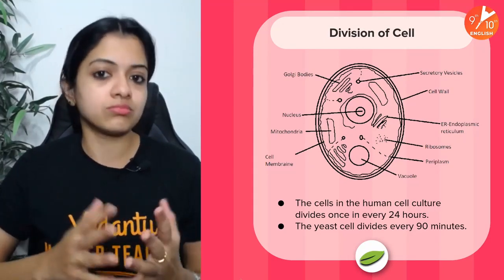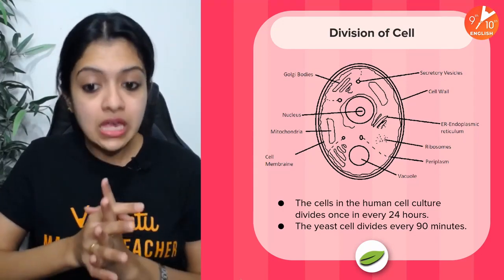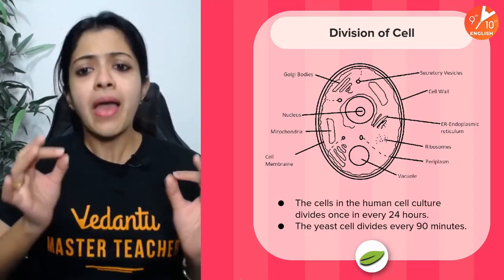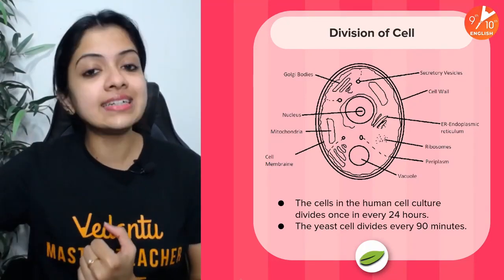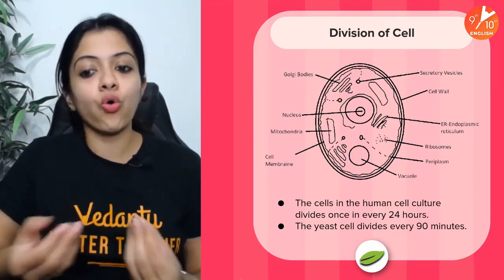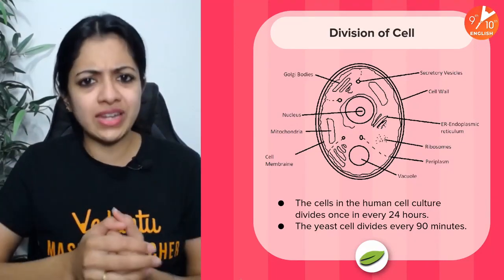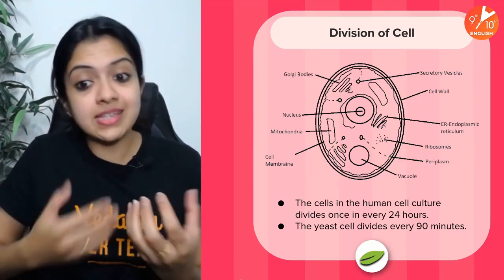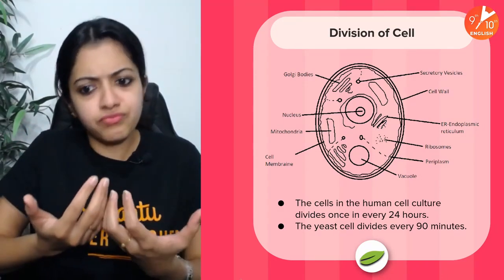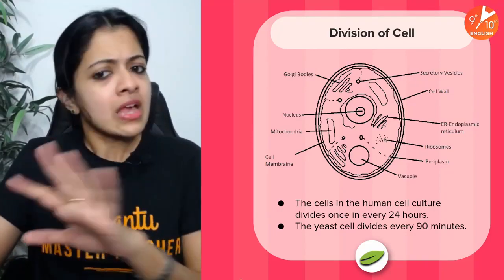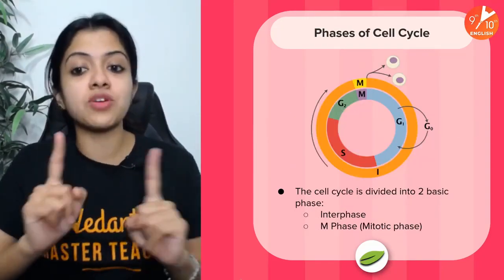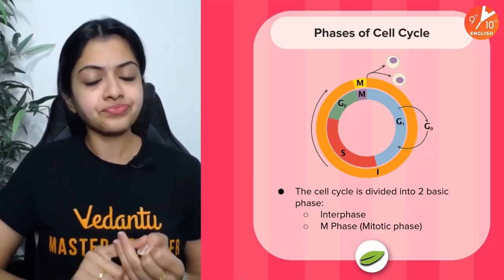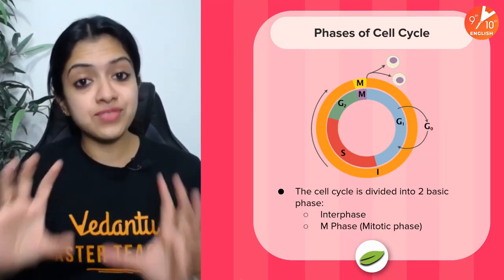For example, yeast cells divide every 90 minutes, while cells in human cell culture divide once every 24 hours. Even among human cells, every single type has its own duration — some divide once a year, some every two years, some every few months. Now, the phases of the cell cycle are super important to know.